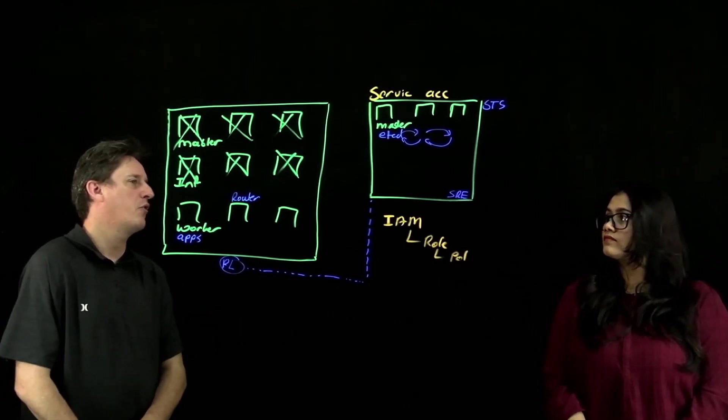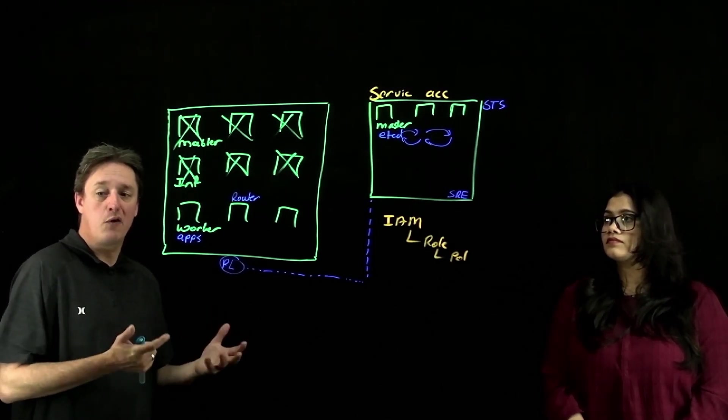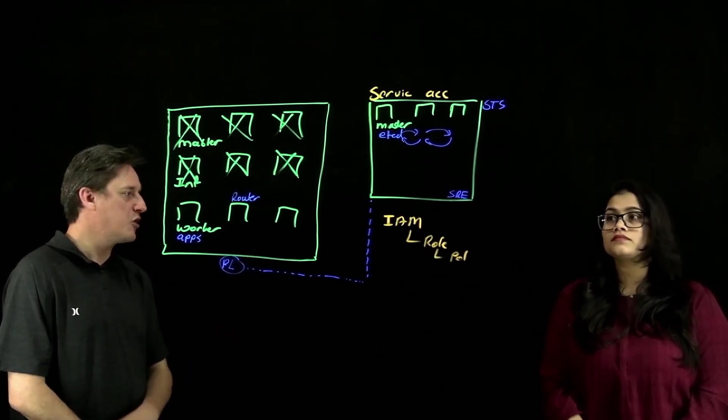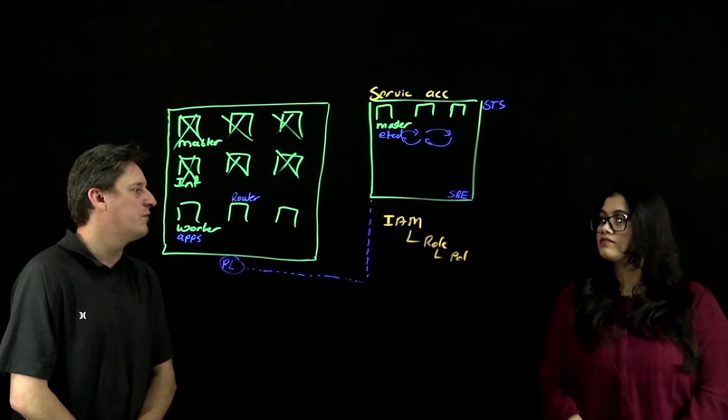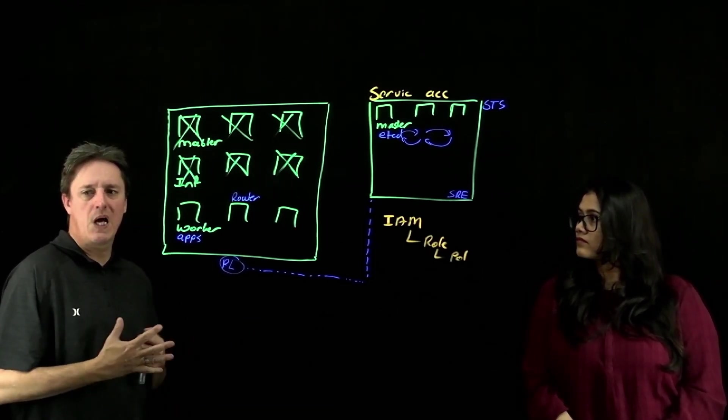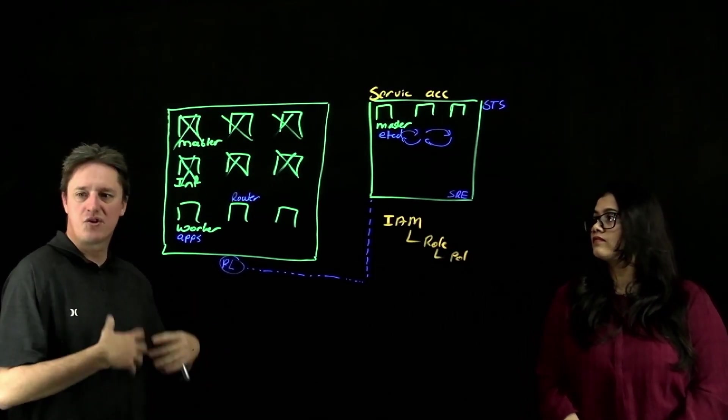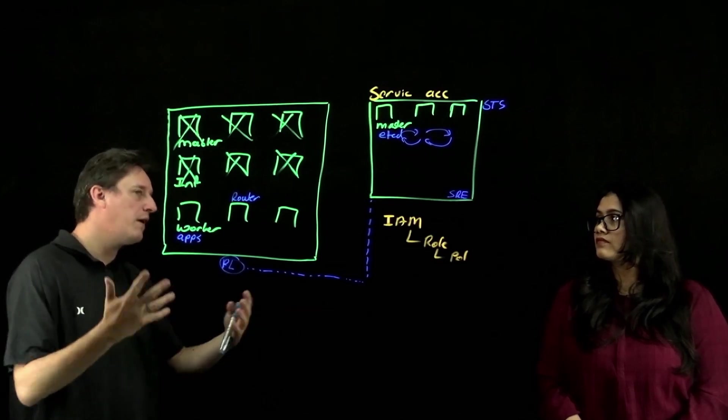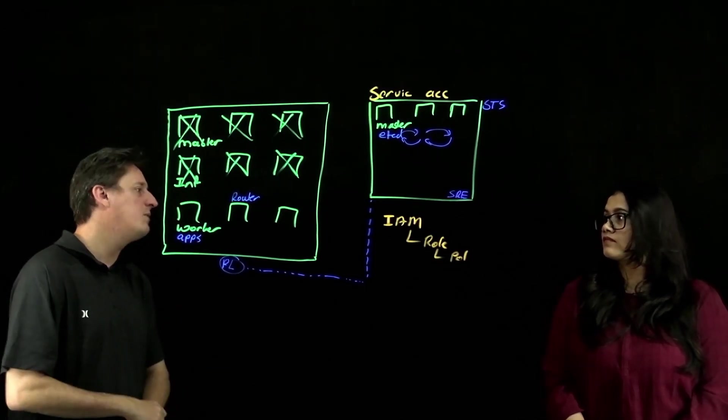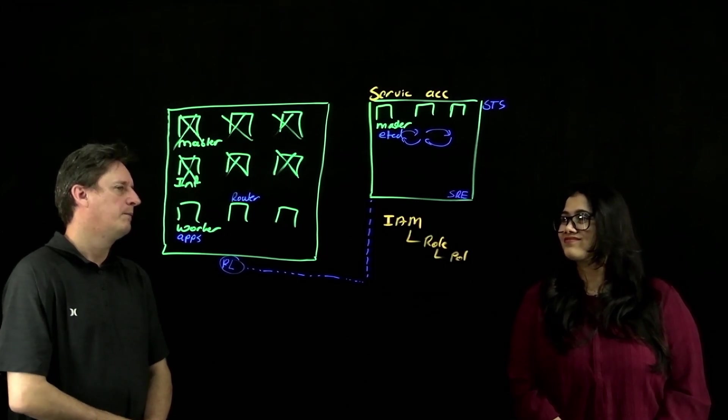Again, on the ROSA documentation, you can find the details for that, as well as some Terraform infrastructure as code templates to actually go and build out the VPCs if you don't already have that. Most customers I'm working with are using something like an Amazon control tower or an organization to build out the VPCs and then they're deploying ROSA into an existing VPC anyway. So I don't see a huge shift there.